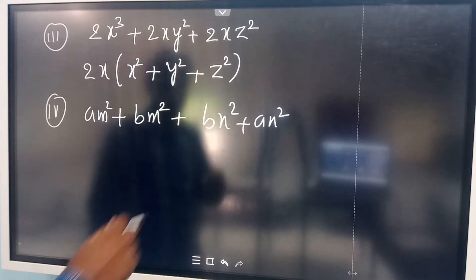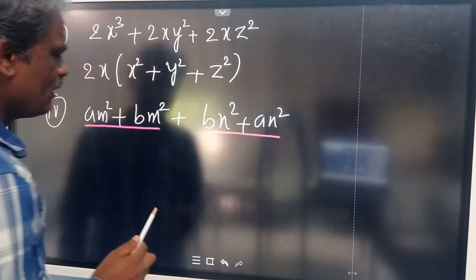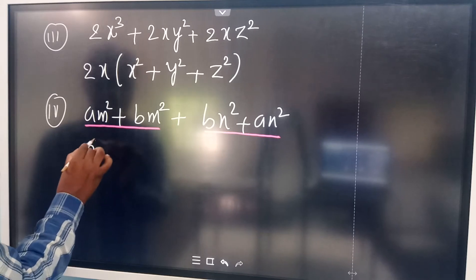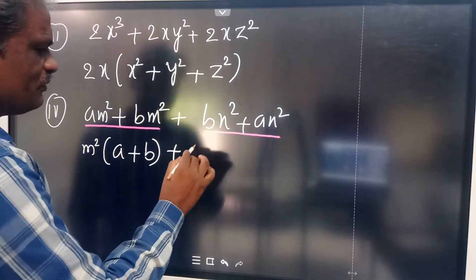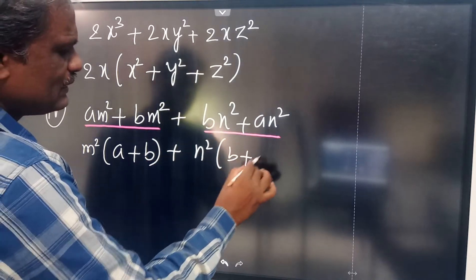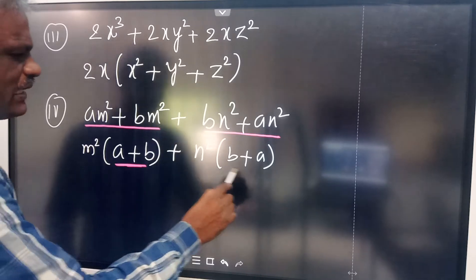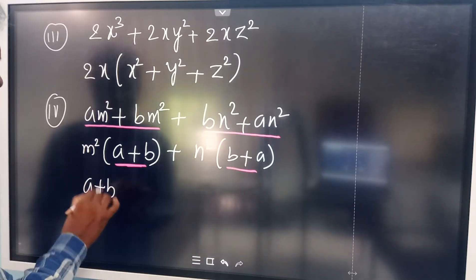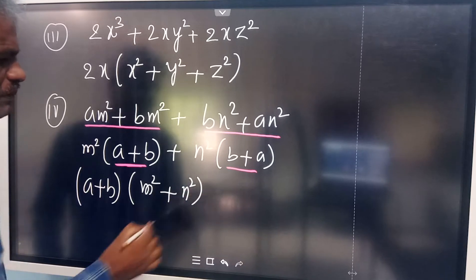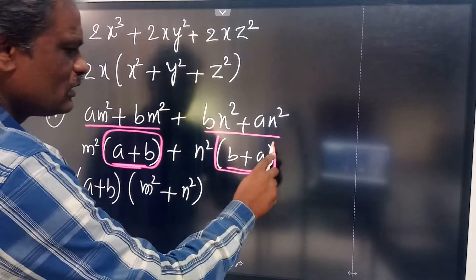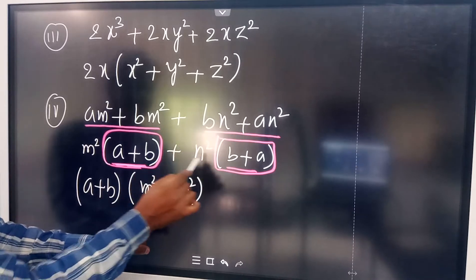The next question has AM squared plus BM squared terms. You can make the first two as one group and the next two as another group. From the first group, M squared is common. If you take M squared common, you will get A plus B. From the second group, taking common gives you A plus B as well. Both groups give A plus B, so A plus B is common in both places.